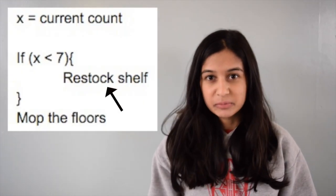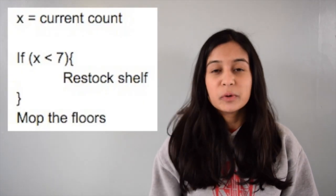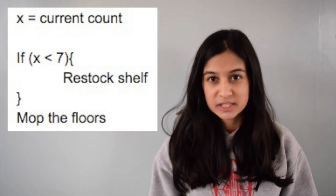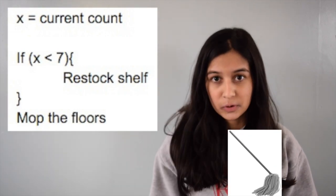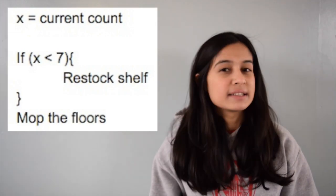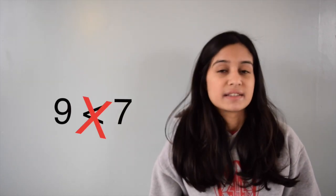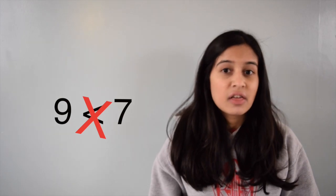Once the action has been completed, we will continue on with the rest of our code — in this case, we will go ahead and mop the floors. However, let's say that we counted nine boxes. Approaching the if statement, nine is not less than seven. Therefore, we are not going to restock the shelves and instead we are just going to mop the floors.